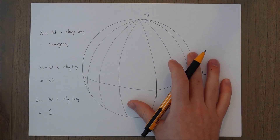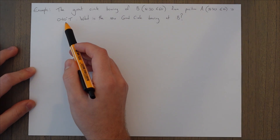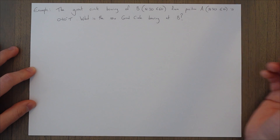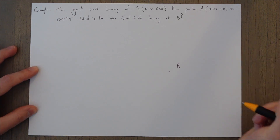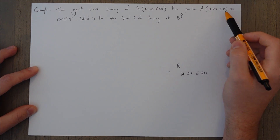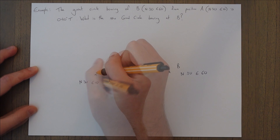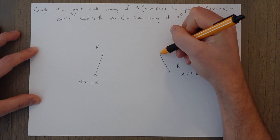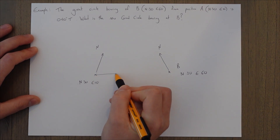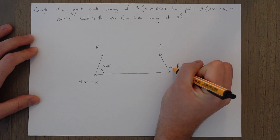Let's take a look at an example of how we would use that. The great circle bearing of B from position A is 040 degrees true. What is the new great circle bearing at B? First things first, we draw the picture. We have point B at North 30, East 60, and point A at the same latitude, North 30, but less far east. We have north up, a great circle going between both of them, and the angle at A is 040 degrees. We're looking for the angle at B.